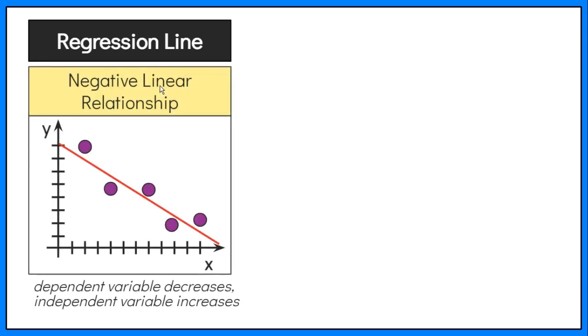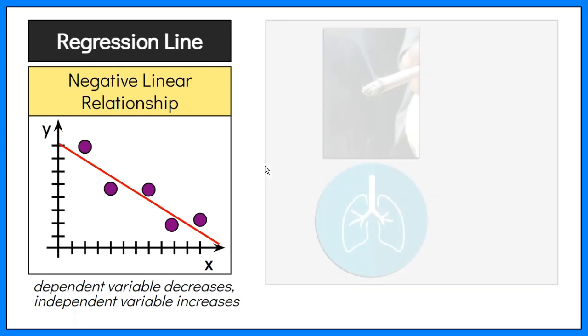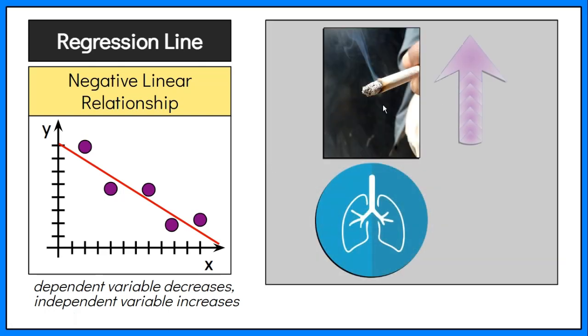On the other hand, the negative linear relationship is when the dependent variable decreases and the independent variable increases. For example, as the amount of smoking increases, you would expect lung function to decrease, but not perfectly.